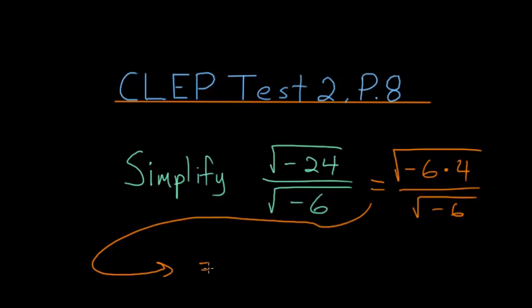And then since we have a product underneath our square root, we can separate it into two different square roots. So we have the square root of minus 6 times the square root of 4 divided by the square root of minus 6.